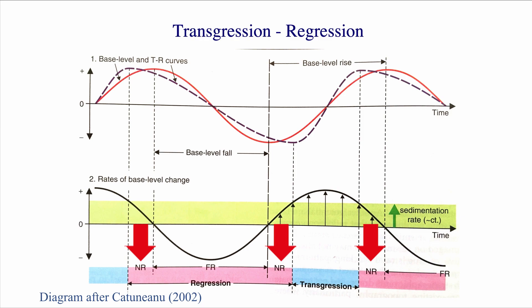And then there's the case where the rate of base level change is negative — you are really having a base level fall. When that happens, by definition you cannot accumulate sediments and you have a forced regression. You can see how important understanding rates of processes is for sequence stratigraphy, and how the relative rate of sedimentation versus the rate of accommodation creation plays a massive role in controlling these different outcomes.